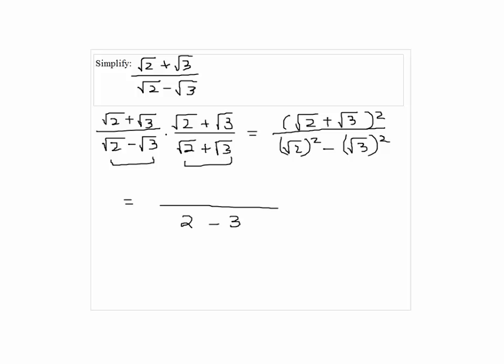So the bottom becomes 2 minus 3, and the numerator we have 2 plus 2 square root of 2 times 3 plus 3.